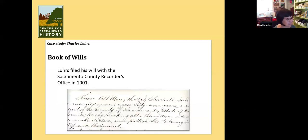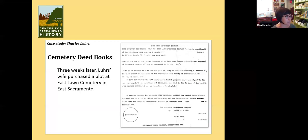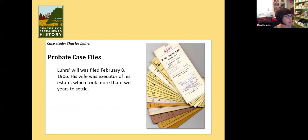He dies — but before that, he knows it's coming and he writes his will, and we've got his will recorded with the county recorder's office in 1901. Then he does in fact die, and here's his obituary from the Union. He also had an obituary in the Bee. Then we've got his deed in the cemetery deed books, which his wife purchased. And then we've got his probate, which is huge because he had a lot of money and property. That's just a quick tutorial on the many places you can find information about a person and tell the story of their life. This probate record would have tons of stuff about what properties he owned, who his heirs were, and who his executor was.